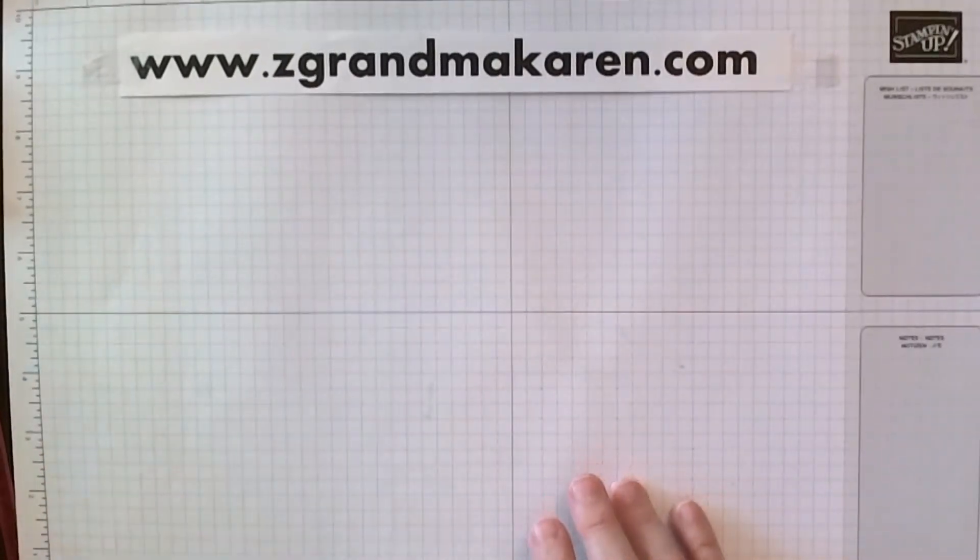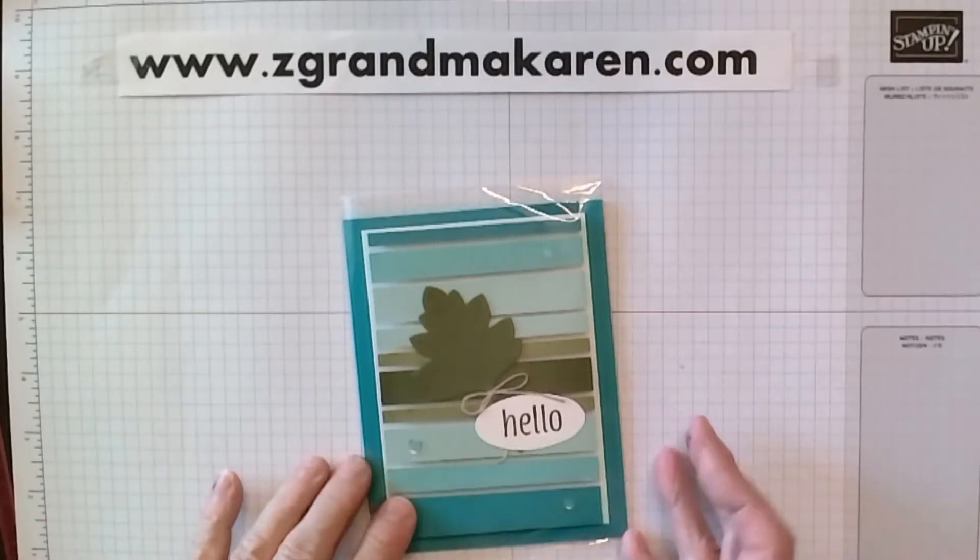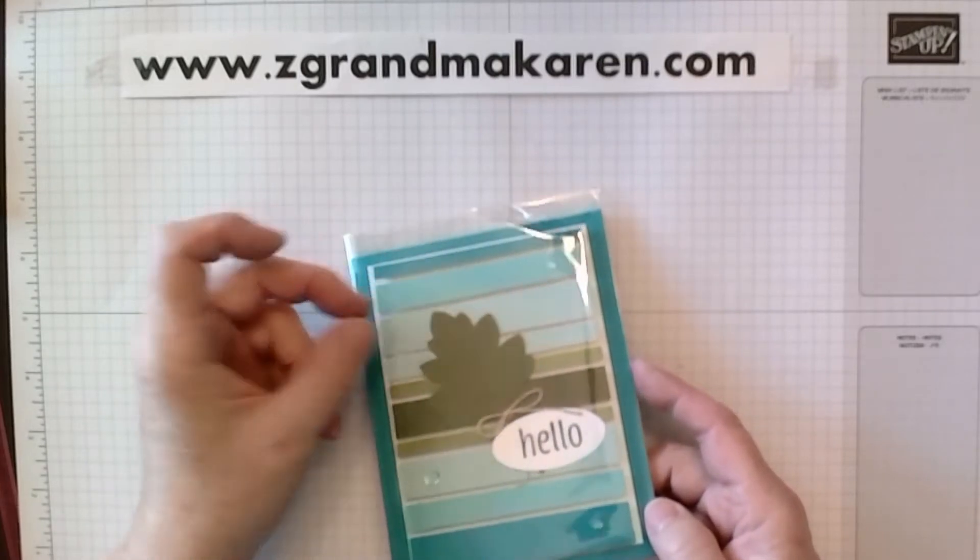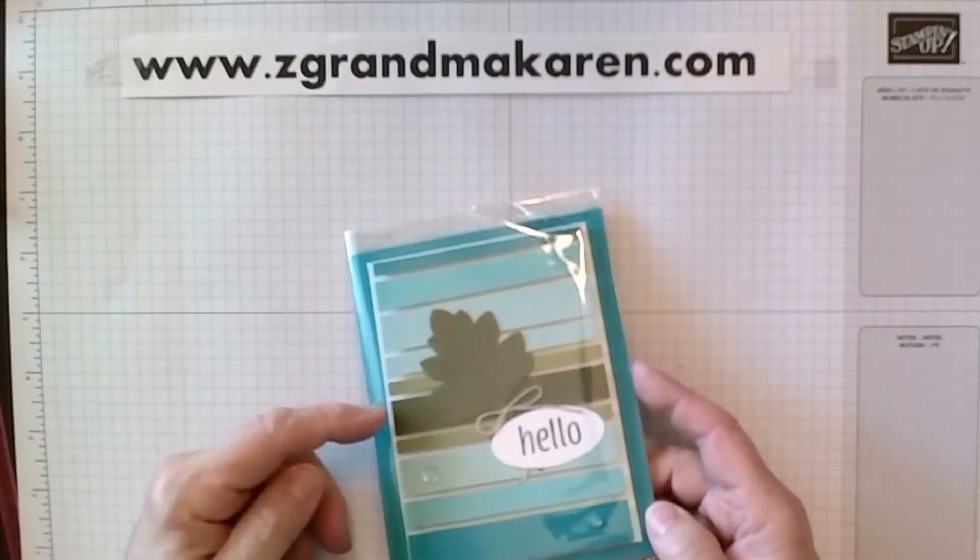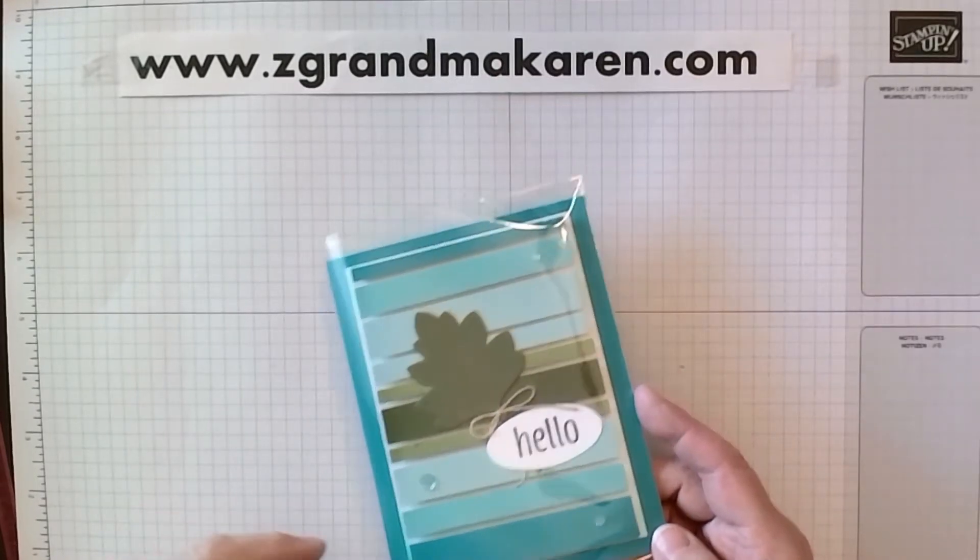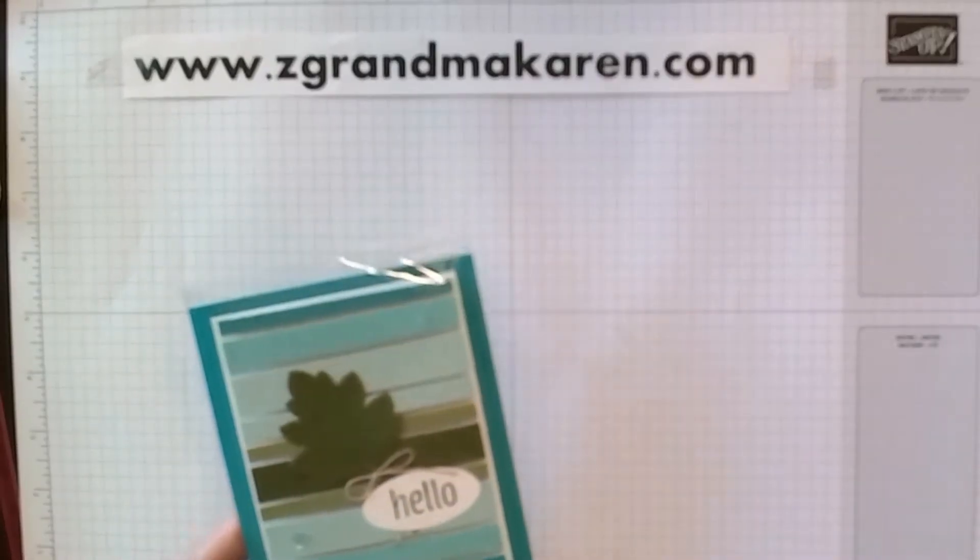I also did another one. I was on a roll. I did another one with, again, different colors, sort of an ombre look on the top and bottom and then the green on the middle and just put a leaf on there. So it's just a real fun technique and you can do a lot of different things with it.